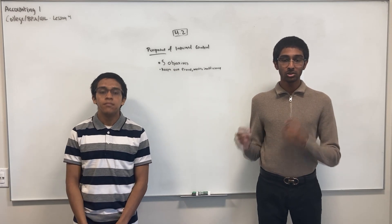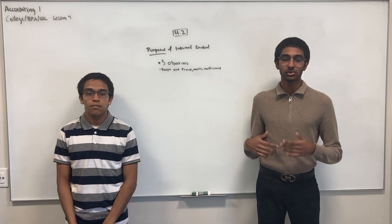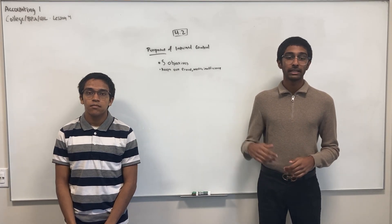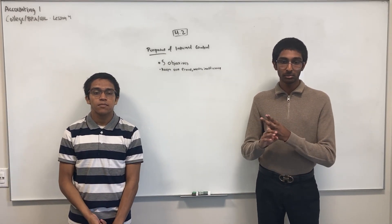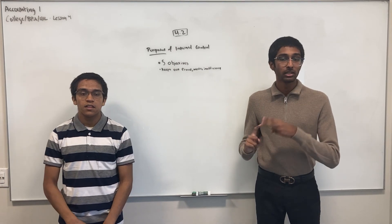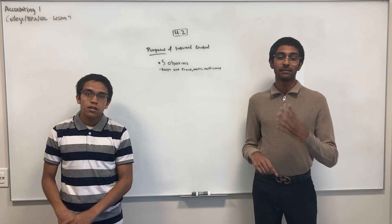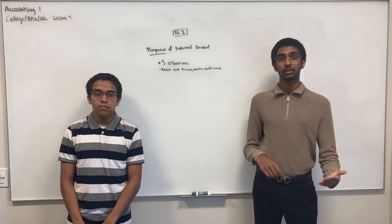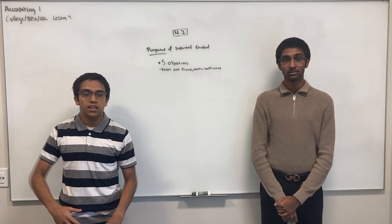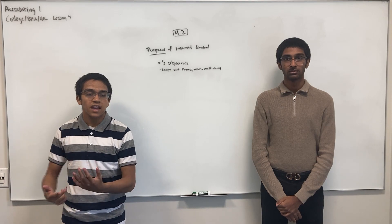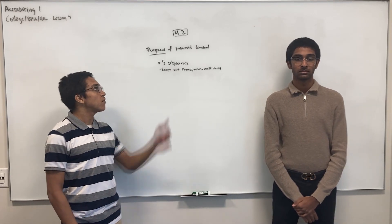The main purpose of internal control is to prevent, detect, and correct fraud. Internal controls consist of methods of business organization and procedures that accomplish five objectives: one, safeguard assets; two, encourage employees to follow company policy; three, promote efficiency; four, comply with legal requirements; and five, ensure accurate and reliable accounting records. Audits ensure these systems keep the business efficient, its records accurate, and its practices compliant with laws.